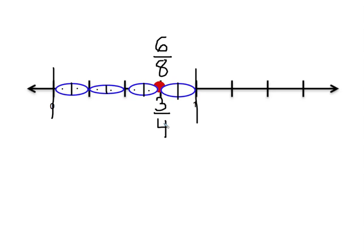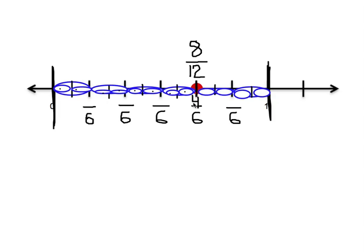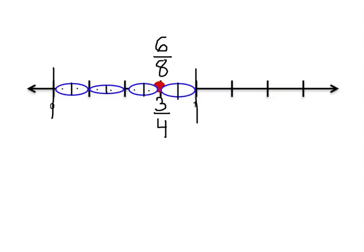So we've just found that 3/4 is equivalent to 6/8. Do you notice a pattern going from 3 to 6 and 4 to 8? Or in our last problem, going from 4 to 8 and 6 to 12? Hopefully you're starting to notice that we're doubling, which makes sense because we have twice as many pieces. You double the denominator: 6 plus 6 equals 12, and you double your numerator: 4 plus 4 equals 8. It works for this problem too: denominator 4 plus 4 equals 8, numerator 3 plus 3 equals 6. Go ahead and practice finding equivalent fractions with number lines.